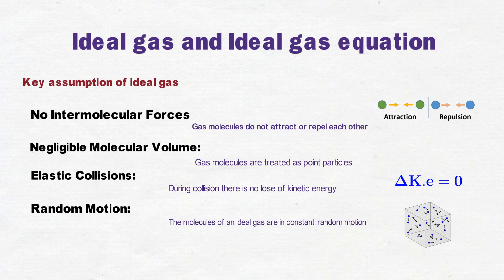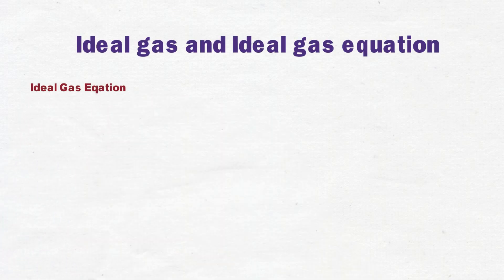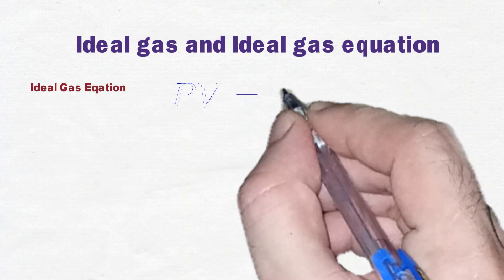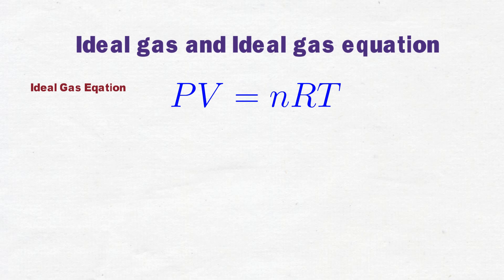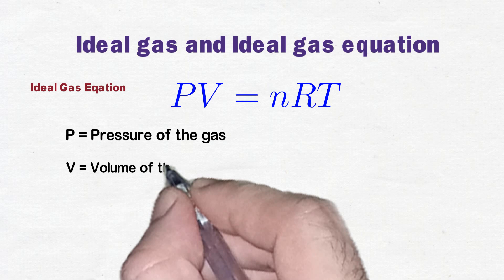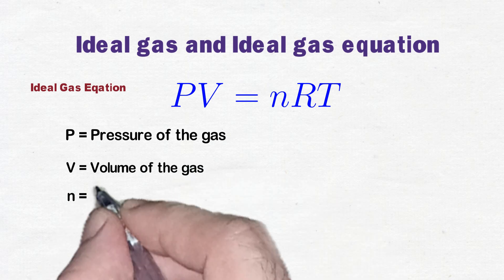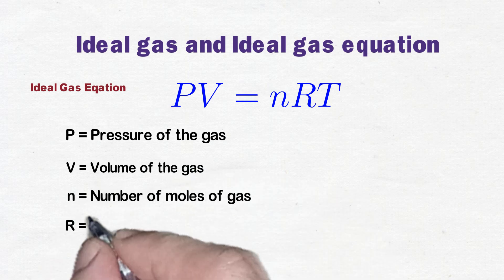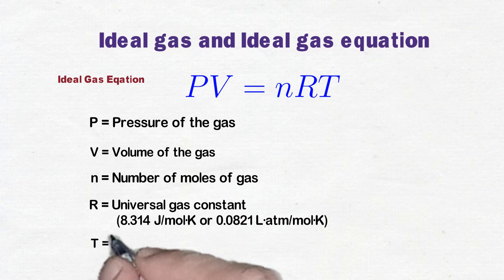Number four: the molecules of an ideal gas are in constant random motion, and the direction and speed of each molecule vary independently. So these were the key assumptions of ideal gas. Now here is the ideal gas equation. The ideal gas equation is a fundamental equation in physics and chemistry that provides a simplified model for understanding the behavior of ideal gas. The ideal gas equation is PV = nRT, where P is pressure, V is volume, n is number of moles, R is universal gas constant, and T is temperature.